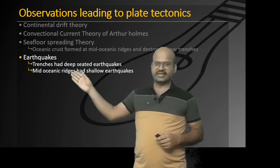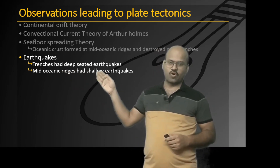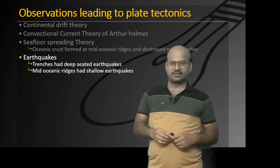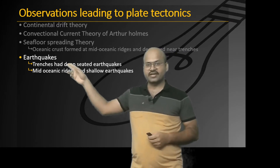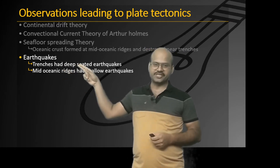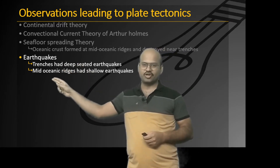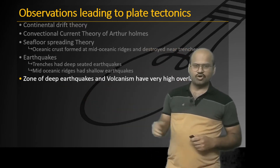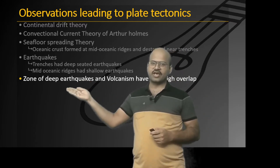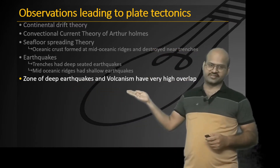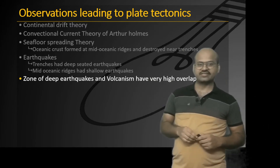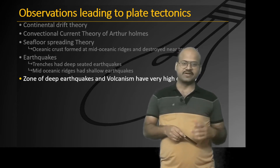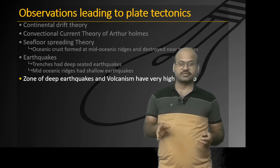Geologists observed that at the trenches we have deep-seated earthquakes while at the mid-oceanic ridges we have shallow earthquakes. This pattern indicated that a certain process occurring at the trenches gives rise to deep-seated earthquakes, while another process at the mid-oceanic ridge gives rise to shallow earthquakes. Moreover, there was a very high overlap between deep earthquakes and volcanic regions, indicating that something occurring beneath the surface causes both volcanism and deep earthquakes, and these two processes must be related.